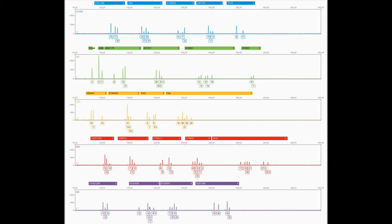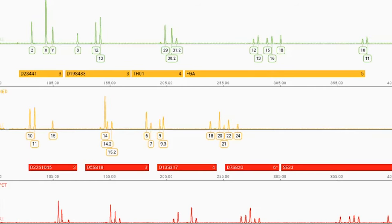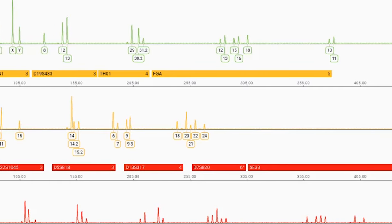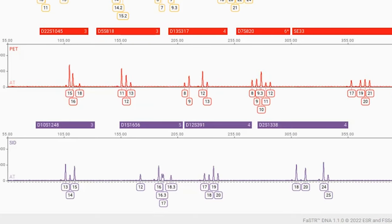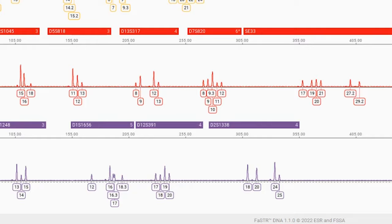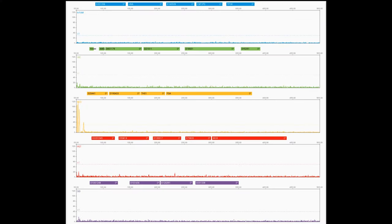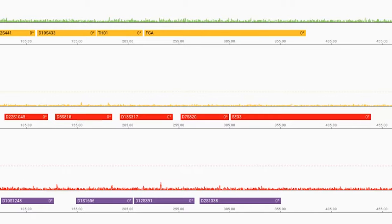Some mixtures are simple, while others are more complex. Depending on how many individuals are present and how much DNA each person contributed, it may not be possible to determine if a specific person is present in a mixture. Other DNA samples have no DNA at all or only a few peaks that are not enough to be useful.